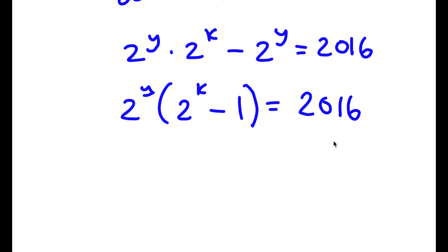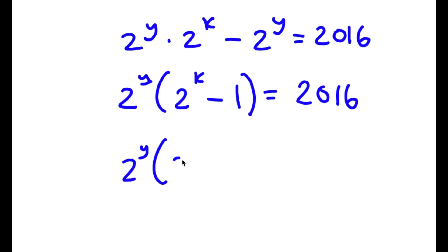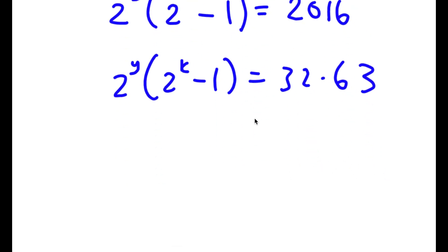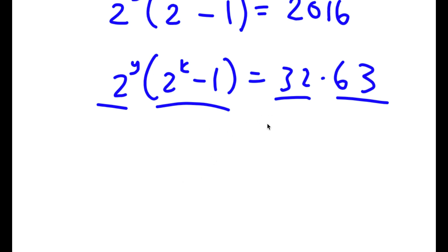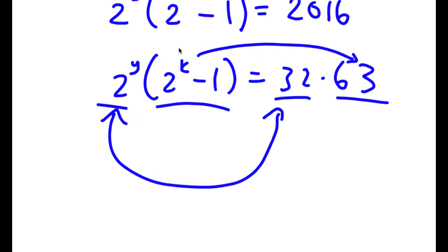Now I can rewrite 2016 as 32 times 63. Notice I have an even number times an odd number. On the left side, 2 to the power of any number is even, and an even number minus 1 is an odd number. So the even and odd parts match up on both sides, meaning these two factors are equal to each other correspondingly.